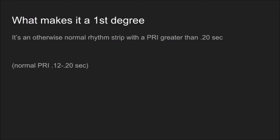Everything else should be otherwise normal except for the fact that the PR interval is greater than 0.20 seconds. If everything else is normal, it's a sinus rhythm and every impulse from the top of the heart is being conducted to the bottom of the heart, but it's taking longer than a fifth of a second — then you're looking at a first degree AV block.